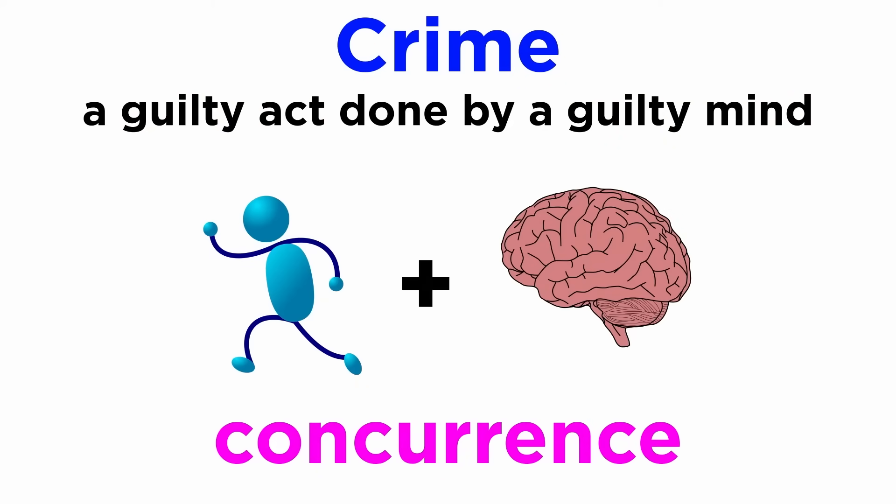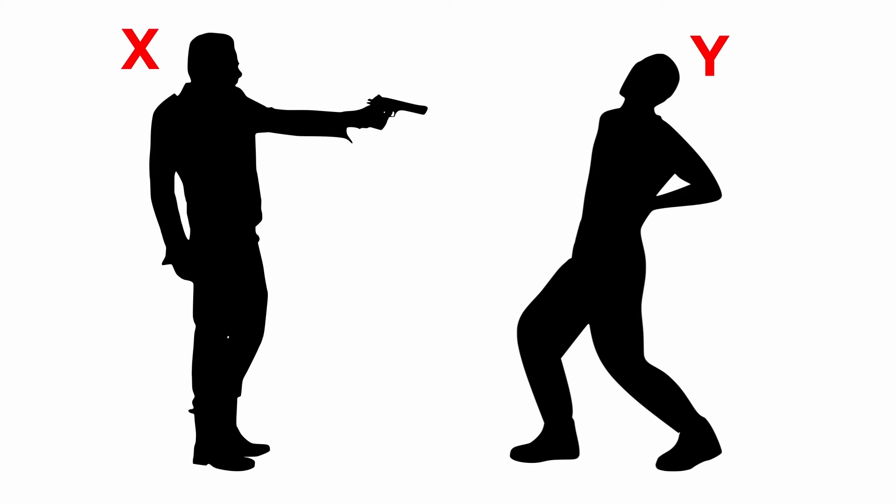Some jurisdictions consider this concurrence of both actus reus and mens rea as separate elements of a crime. Let us illustrate with a few examples. Let's say person X shoots person Y with the intent to kill, and the bullet lodges into Y's heart. Here, both guilty mind and guilty act are present. Hence, X has committed a crime and will be convicted of murder.